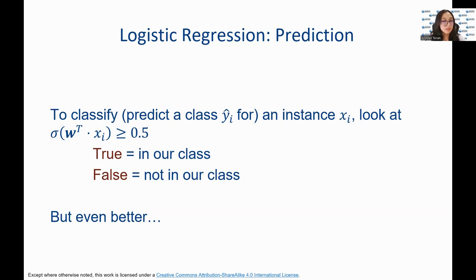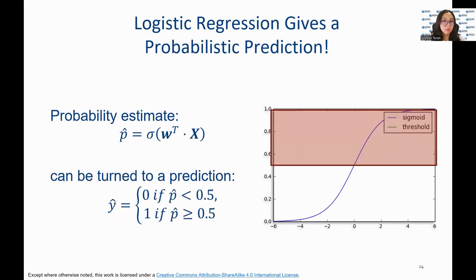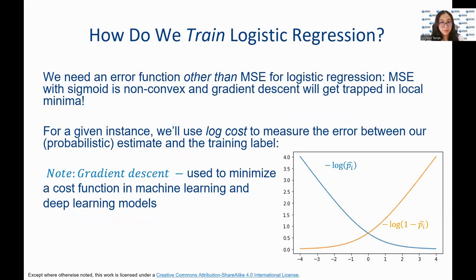It is even better to take into consideration probabilistic predictions, where probability estimates can be turned into a prediction based on a threshold — for instance, y-hat is 0 if the probability estimate is less than 0.5, or 1 if the probability estimate is greater than or equal to 0.5. Logistic regression is trained using log cost to measure the error between our probabilistic estimate and the training label. By using the log cost, the optimization algorithm finds the set of weights that minimize the logarithmic difference between the predicted and actual class labels, which helps ensure convergence and avoids getting trapped in a local minimum.